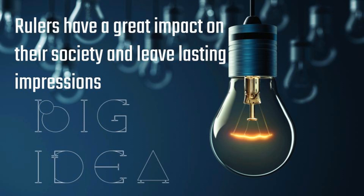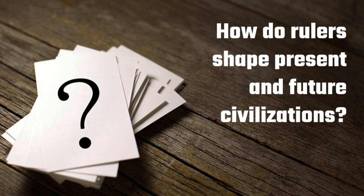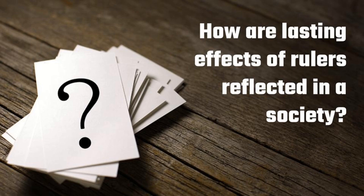Just like always, we've got a big idea and essential questions. The big idea for this unit is: rulers have a great impact on their society and leave lasting impressions. First essential question: how do belief systems influence a people's way of life? The second essential question: how do rulers shape present and future civilizations? And the last essential question for our unit on China is: how are lasting effects of rulers reflected in a society?